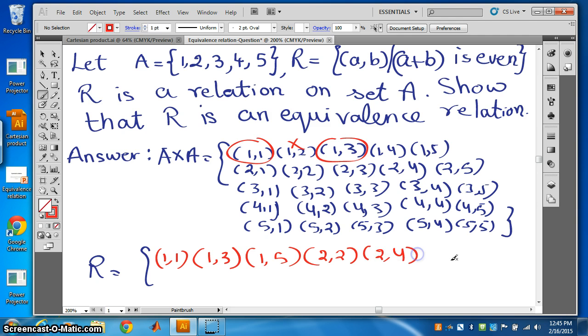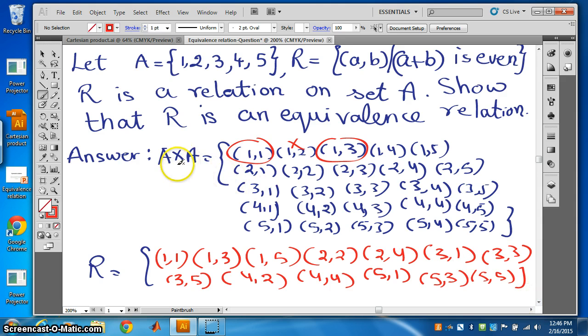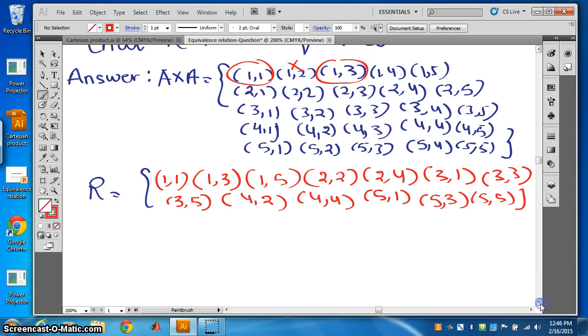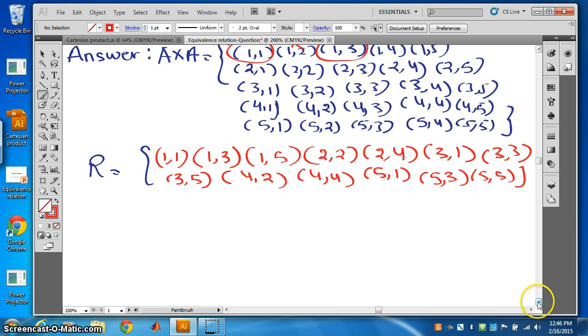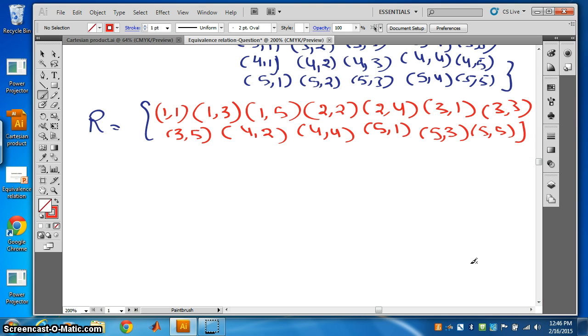(3,1), (3,3), (3,5). (4,2), (4,4). (5,1), (5,3), (5,5). Now this is R. A cross A is not necessary to write, you can think in your mind. But you must write what is R here. R is a relation, so you must write down what are the elements of R.